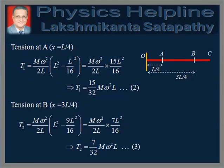Therefore, tension at a distance x equal to L by 4 is obtained by putting x equals L by 4 in equation 1, which gives T1 equals 15 by 32 M omega square into L.